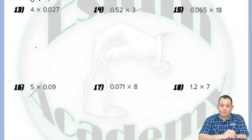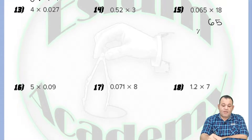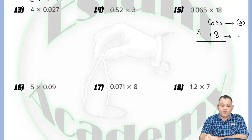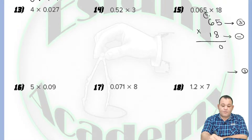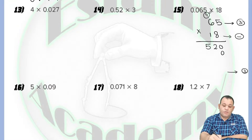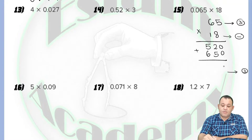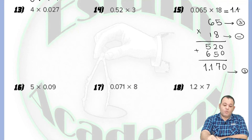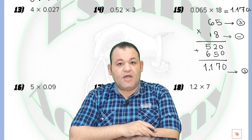In question number 5, by the same method, we have 0.065 times 8. We write 65 multiplied by 8. The first number has three digits to the right of the decimal, and no decimal in 8 — so the decimal goes after three digits in the product. 8 times 5 equals 40 — write 0 and carry 4. 8 times 6 equals 48, plus 4 equals 52. Placing the decimal point after three places, the product equals 0.520. And that's how we multiply a decimal by a whole number.